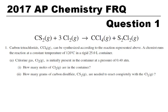We're going to look at the first question on the 2017 AP Chemistry exam. It starts off with an equation: carbon disulfide plus three chlorines turns into carbon tetrachloride and S₂Cl₂. Carbon tetrachloride can be synthesized according to this reaction. A chemist runs the reaction at a constant temperature of 120 degrees in a rigid 25.0 liter container. Chlorine gas is initially present at a pressure of 0.4 atmospheres. How many moles of chlorine are in the container?